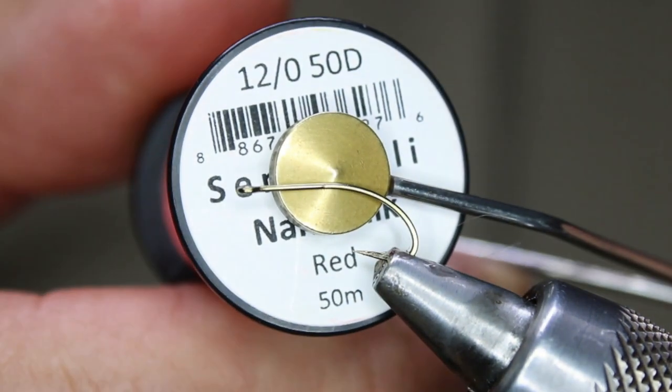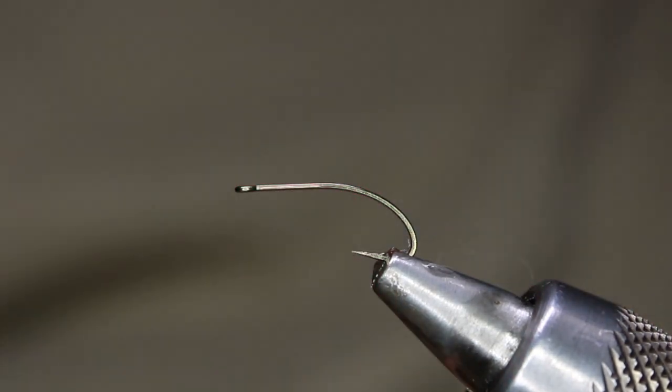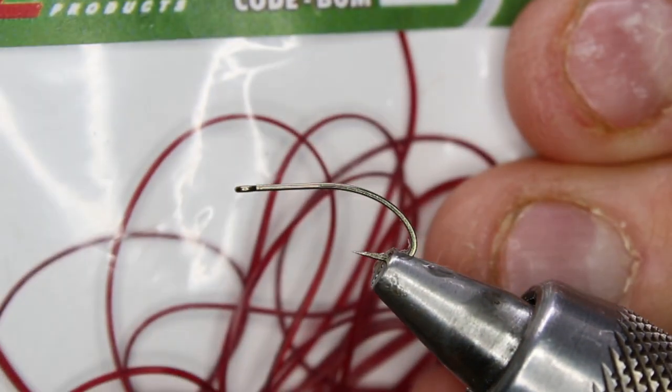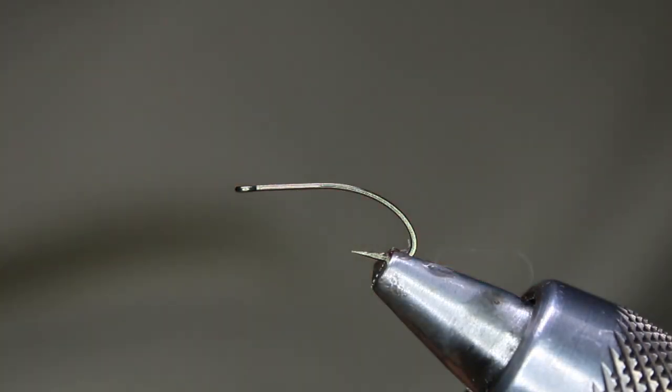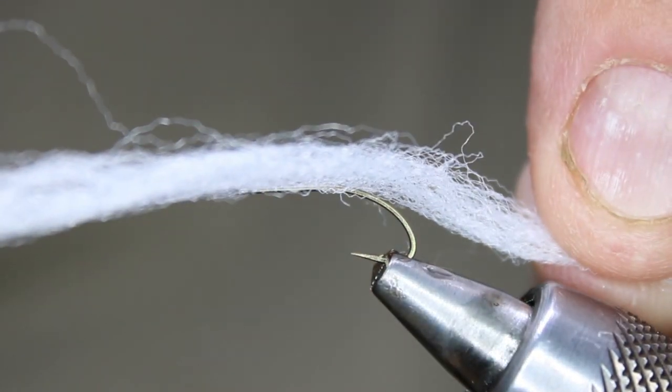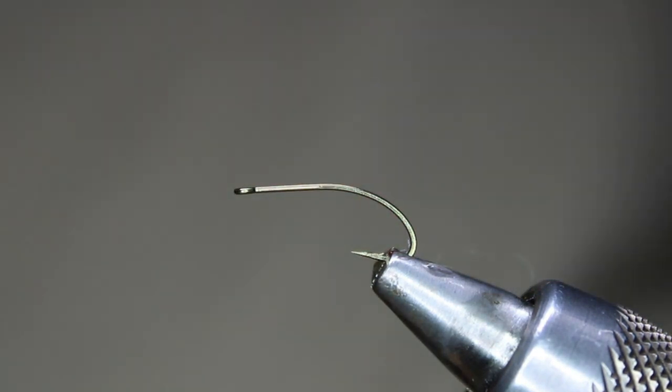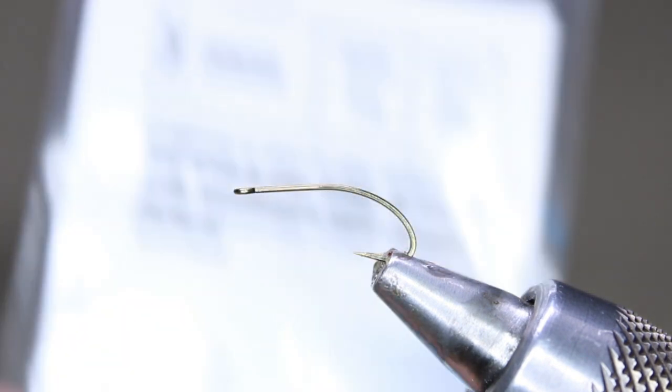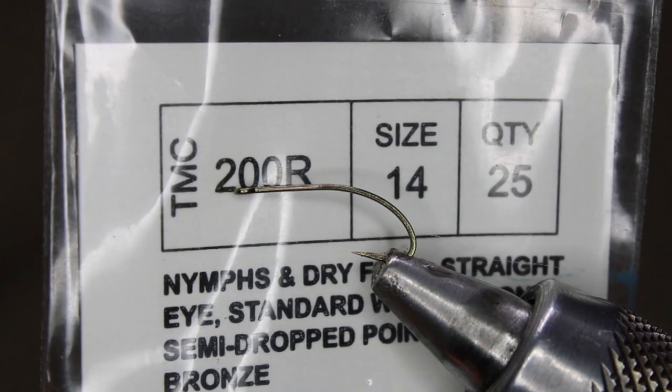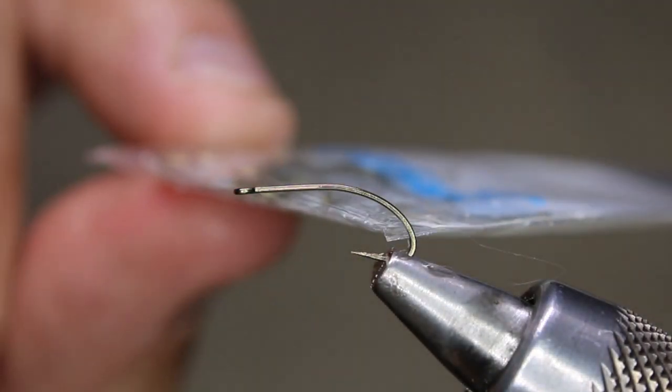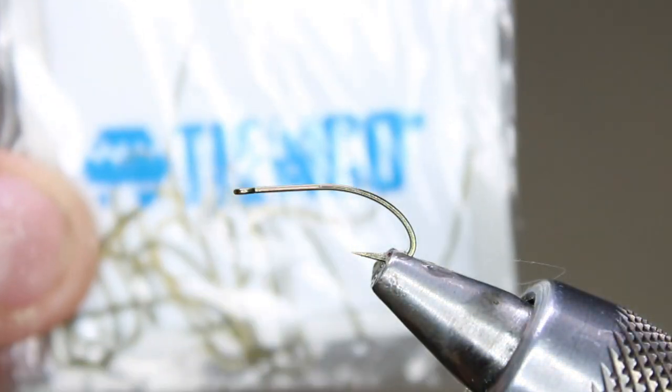All it's going to use is the hook, Zemperfly nano silk in red, the Hends half round body glass micro in red, and then a little bit of floss for the gills. Now the hook, that's up to you what you want to do. There's so many different pattern hooks out there. I know this is the one that most people use, is the TMCO 200R. To be honest, I'm not a big fan of the TMCO 200R. I find they break too easy.